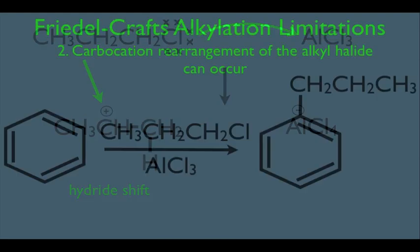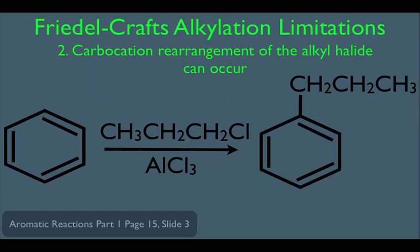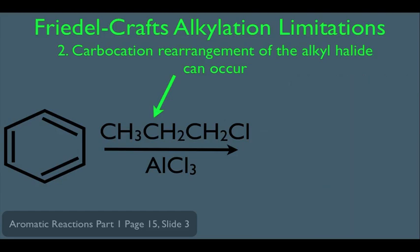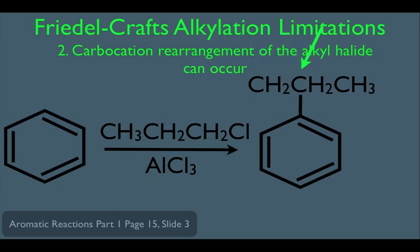Because of the rearrangement, we wouldn't get the expected product where the original primary carbocation connects directly to the benzene ring. Instead, the carbocation shifts to the adjacent carbon, and it is that carbon that directly connects to the benzene ring — giving us the true product of the reaction. If this rearranged product was not what we wanted and we instead needed the primary carbocation attached to the benzene ring, we'll learn in another online lecture how to get around this problem.